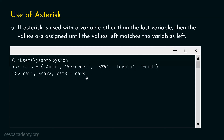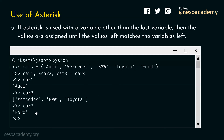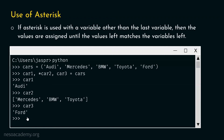Let's verify. Type car1 and hit enter — we get Audi. Type car2 and hit enter — we get Mercedes, BMW, and Toyota as a list. Type car3 and hit enter — we get Ford. This confirms how asterisk works when placed in front of a non-last variable.